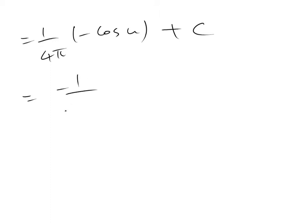This is equal to minus 1 divided by 4 pi cosine u plus c. That is the constant of the integral. So all you need to do at this stage is to replace this parameter u by the definition.